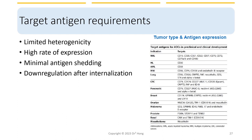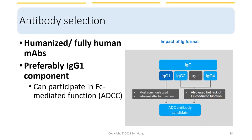We talked about different antibody isotypes in the immunology series. When considering antibodies for ADC development, it is really preferred to use IgG1. Because in addition to its ability to bind to antigens, the Fc region of IgG1 can also bind to Fc receptors and participate in Fc-mediated functions such as antibody-dependent cellular cytotoxicity.